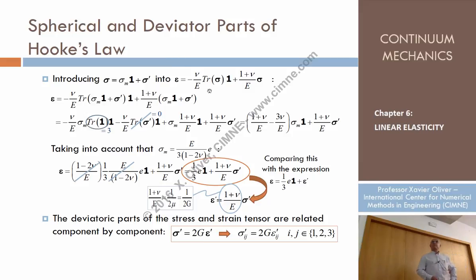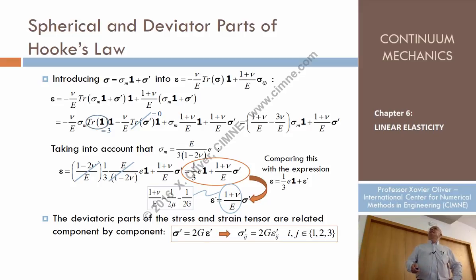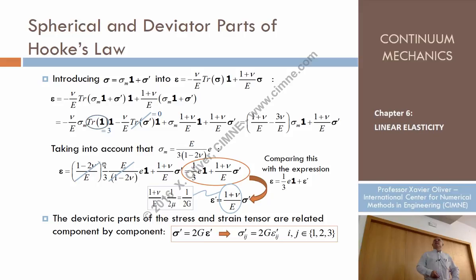What about the deviatoric part? We start again from Hooke's law, and replace the stresses by their spherical and deviatoric parts, and the strains similarly. After carrying out the operations, we obtain that the strains equal one-third of the spherical strain E times the identity, plus a term (1+ν)/E times the deviatoric part of the stresses. Replacing the strain as its spherical part plus deviatoric part, we identify this second term as precisely the deviatoric part of the strain.